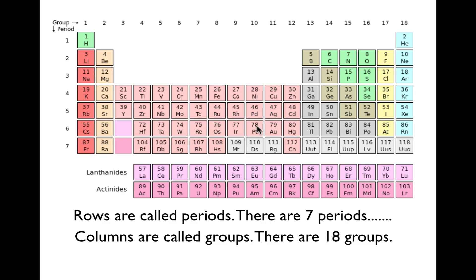An easier way to know the number of valence electrons is to look at the groups and periods. The rows are called periods and we have seven in the periodic table. Then the groups are one, two, three, four, all the way through to 18.